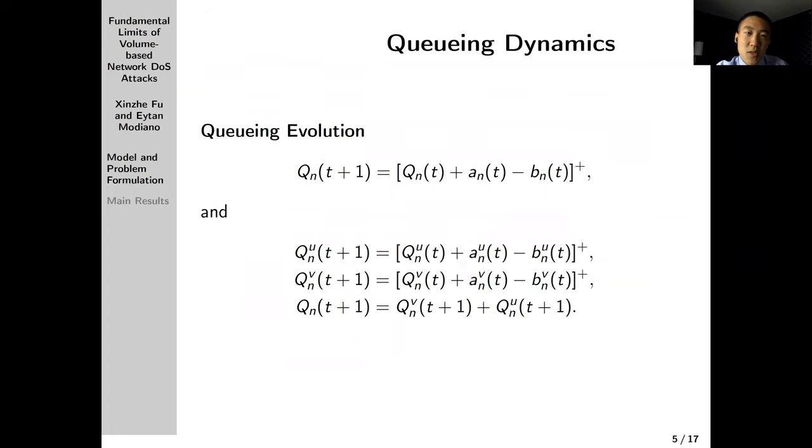Based on these assumptions, we can write the queue evolution as this. We can also decompose the queue at each server as user traffic and adversarial traffic. Note that this decomposition is just for the sake of exposition. In our model, the user traffic and adversarial traffic are queued together. There's only one queue at each server.